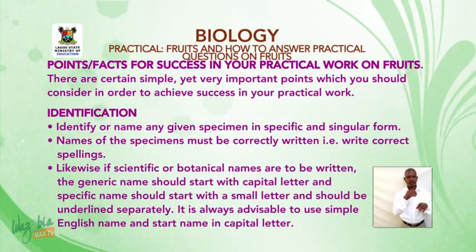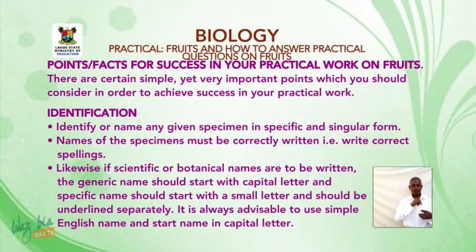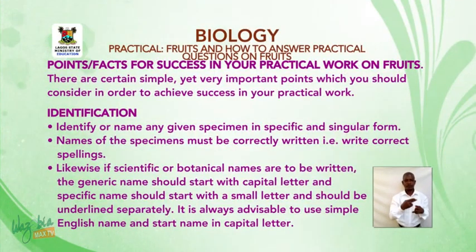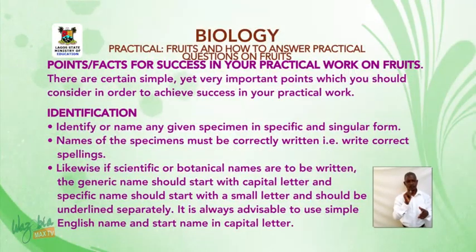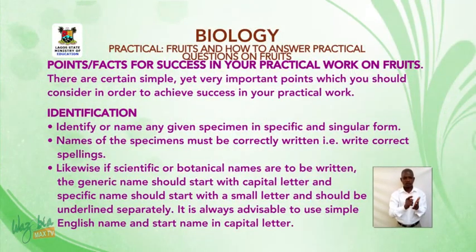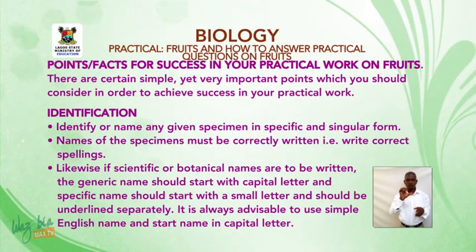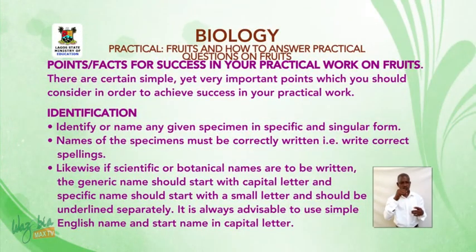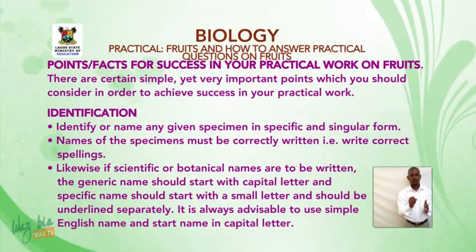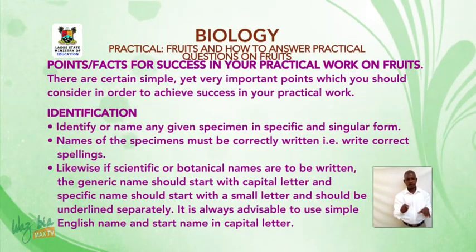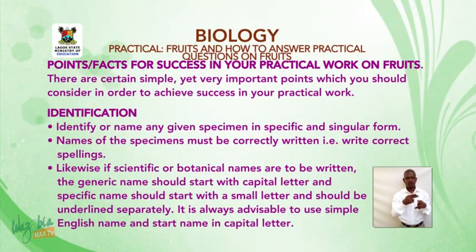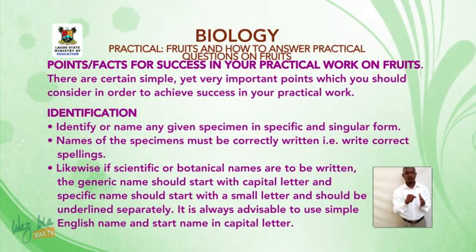Identification: Identify or name any given specimen in specific and singular form. Names of the specimens must be correctly written — that is, write correct spellings. If scientific or botanical names are to be written, the generic name should start with a capital letter. The specific name should start with a small letter and should be underlined separately. It is always advisable to use simple English names and start names with a capital letter.